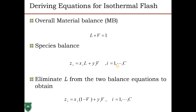The derivation of flash calculations is based on a combination of material balances and equilibrium relationships. The overall material balance is L plus V equals 1 (with F as unity basis). The species balance gives: Zi·F = Xi·L + Yi·V, which simplifies to Zi = Xi(1 − V) + Yi·V for each component. We then eliminate L in favor of V to get: Zi = Xi(1 − V) + Yi·V.